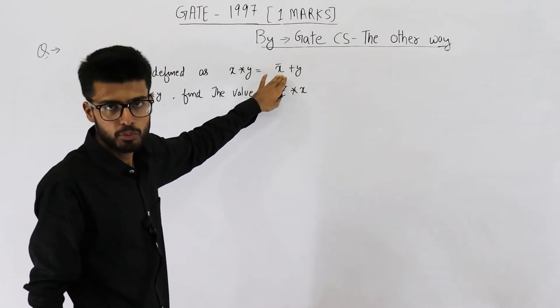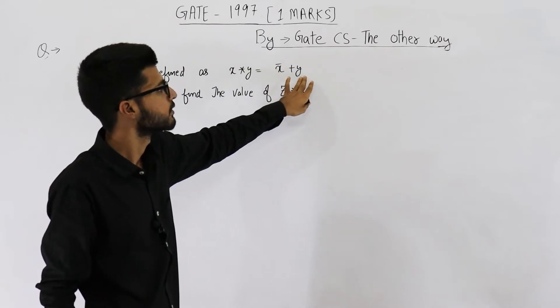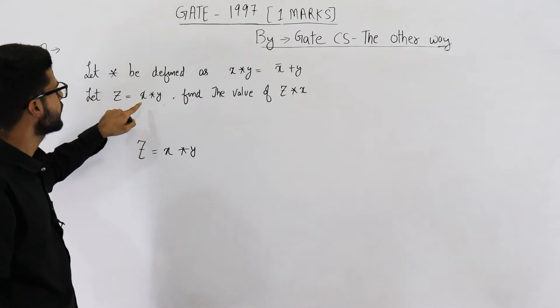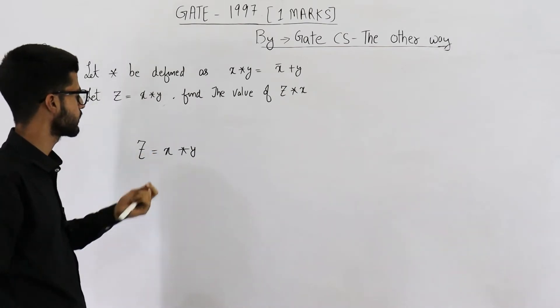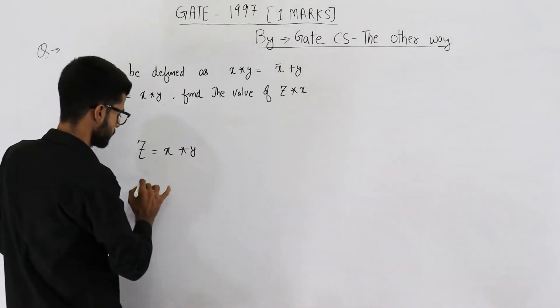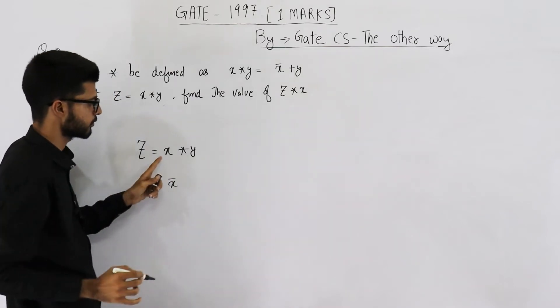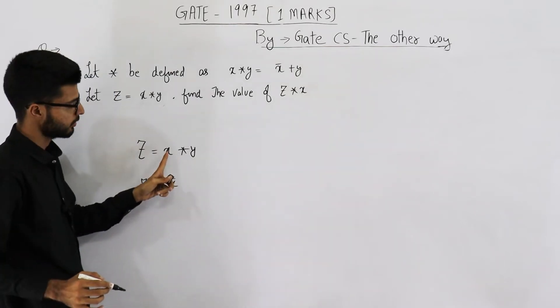That means complement of first input OR with second input. Then z is defined as x star y, so this is the value of z. Let's solve it. z equals complement of first input, solving the star: complement of first input plus the second input.